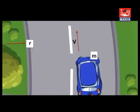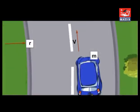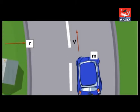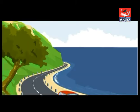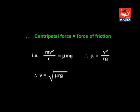Let m be the mass of the car moving with speed v along a curved road of radius r. Then, for a safe turn, centripetal force is equal to force of friction. mv² / r = μmg.